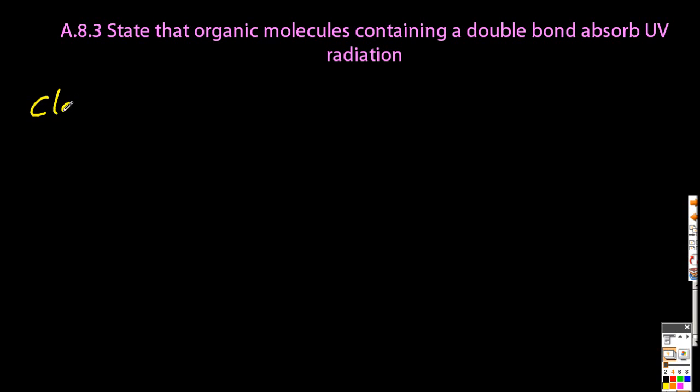Groups known as chromophores are found in organic molecules, and they absorb ultraviolet or visible radiation. We're going to look at ultraviolet now, and there are two sorts of structures that you need to know that will absorb ultraviolet.